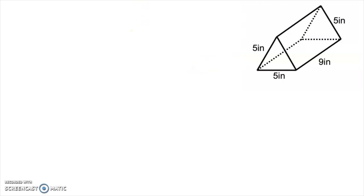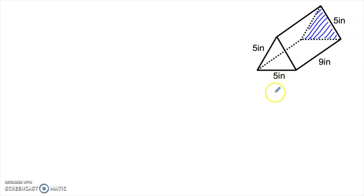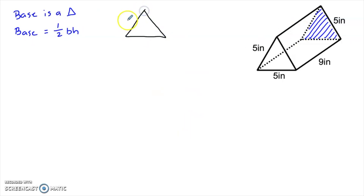Here are two more examples requiring a bit more work. Here we have a triangular prism — what makes it a triangular prism is that the Big B Base is a triangle. If we tried to use one of the rectangular sides to stack up, that rectangle would have to get smaller and smaller as we stacked, which is against the rules. Once we establish the Big B Base is this triangle, we need to find its area using one-half base times height. This time they didn't tell us the height of the triangle. We know all three sides are 5 inches — it's equilateral — so we can use 5 for the base, but we need the triangle's height.